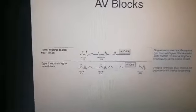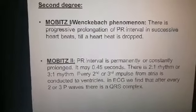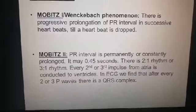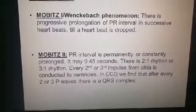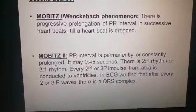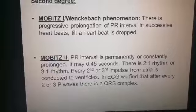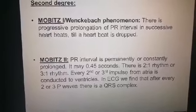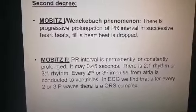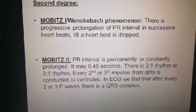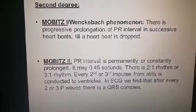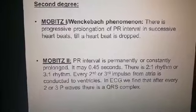In Mobitz type 2, the PR interval is permanently or constantly prolonged — it may be 0.45 seconds, which is a very extreme level. There is no progressive prolongation of the PR interval as in Mobitz type 1. This is the key difference: in Mobitz type 1 there is progressive prolongation, but in Mobitz type 2 there is a permanent or constant PR interval prolongation.